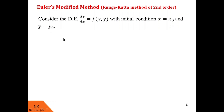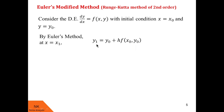Then by Euler's method, the value of the solution at x = x1 is given by y1 = y0 + h·f(x0, y0). We have seen this formula in my previous video; the link is given in the description box. After this point, Euler's modified method comes into the picture.